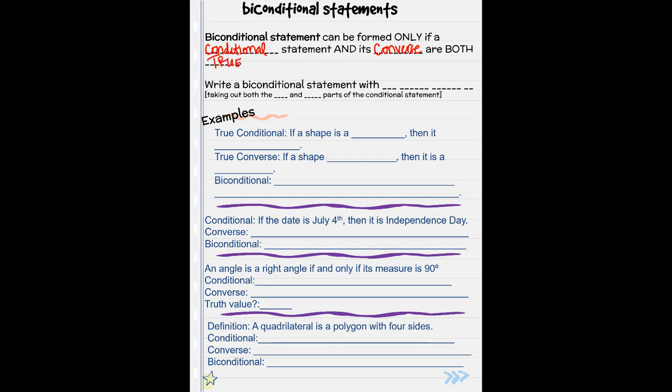So we were doing that a little bit when we were looking at the truth value. We're going to have to do that for these in order to write a biconditional.